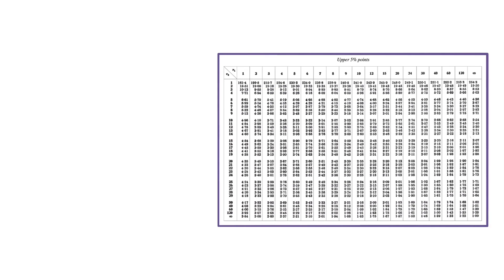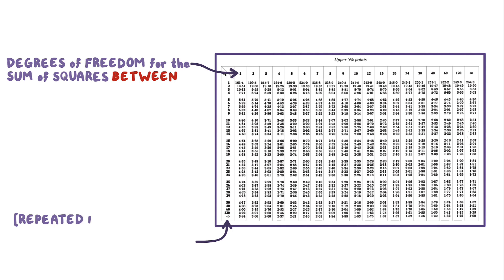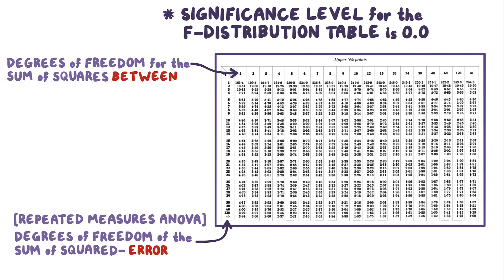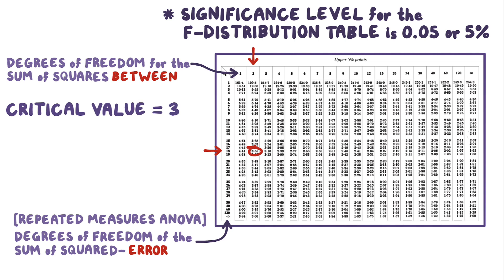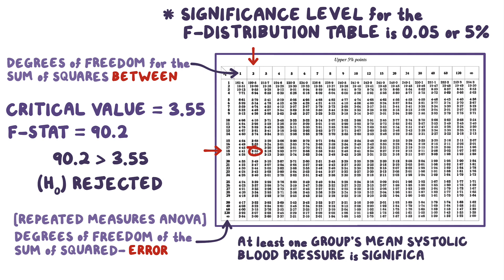Critical values can be found on an F-distribution table, which has the degrees of freedom for the SSB on the top, and the degrees of freedom for the SSW (or in repeated measures ANOVA, the degrees of freedom of the SSE) on the side. The significance level is typically 0.05, or 5%. Using 2 degrees of freedom for the SSB and 18 degrees of freedom for the SSE, we find a critical value of 3.55. Our F-stat of 90.2 is much higher than 3.55, so we reject the null hypothesis and conclude that at least one group's mean systolic blood pressure is significantly different from the others.